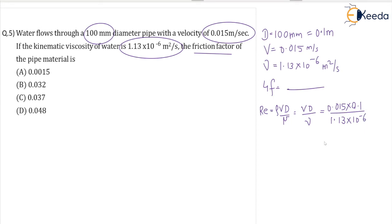Calculating this, we get Reynolds number equal to 1327.4. This is less than 2000, so it's definitely a case of laminar flow.